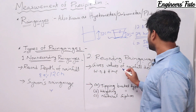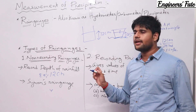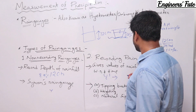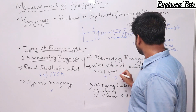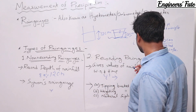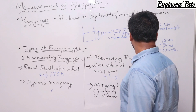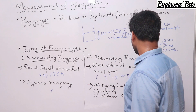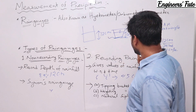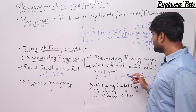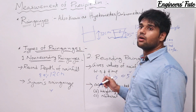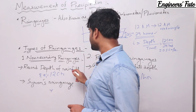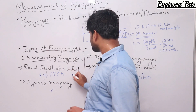A recording rain gauge gives values of rainfall depth with respect to time, meaning it gives the intensity of rainfall — for example, 0.5 cm per hour. The non-recording rain gauge only shows the depth of rainfall without mentioning rainfall depth with respect to any time duration.